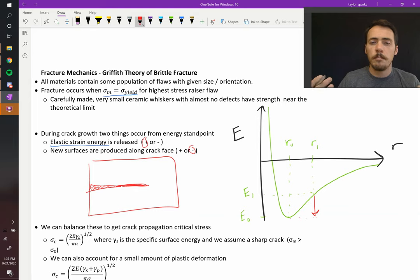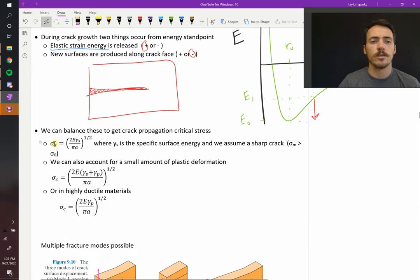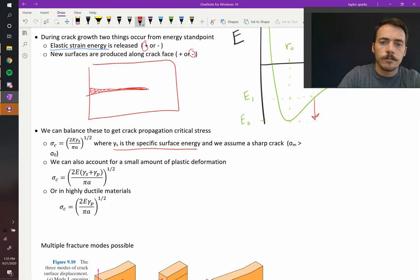So the whole key here was to balance these two things. It said, let's balance the energy benefit from reducing our lattice strain with the energy penalty of creating new surfaces. And this allowed them to calculate a critical stress, sigma c. And they basically said it's equal to 2 times the modulus times gamma s. Gamma s is your specific surface energy. And then pi, divided by pi times a, your half crack length. Take this whole thing to the square root. And that's assuming for a sharp crack.